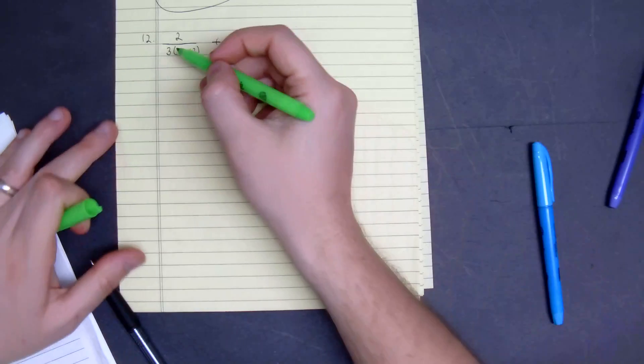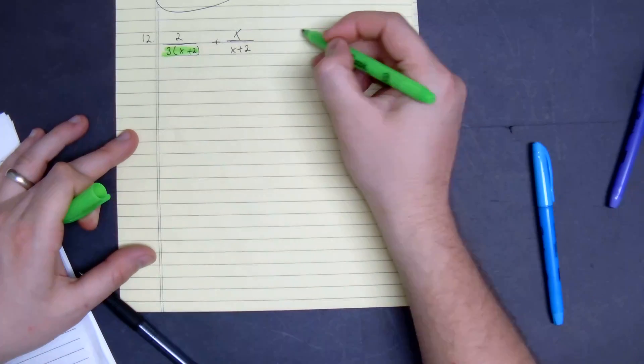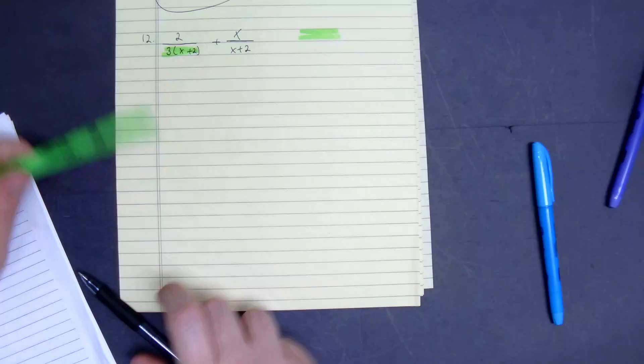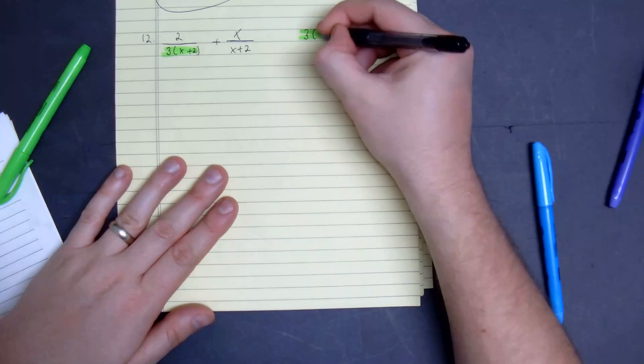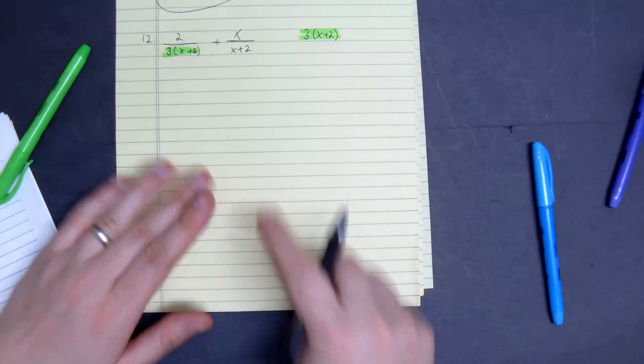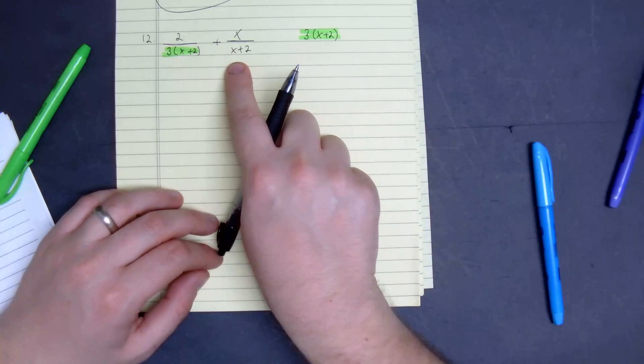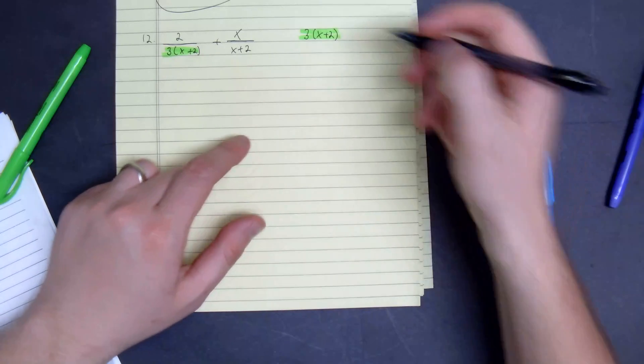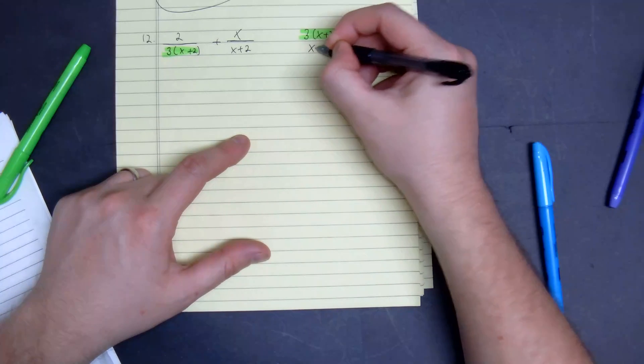So the first thing we have right here is 3 times the quantity of x plus 2. And then the bottom, which is the same, which is the reason why I want to keep it the same, is just going to be x plus 2.